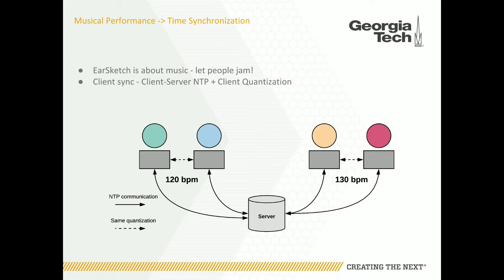EarSketch is about music, so you want to let people jam. For implementing client-to-client synchronization, there are two steps. First, every browser coordinates its time with our server using NTP — network time protocol. With this coordinated time stream, all play events are quantized to a beat determined by the tempo of the script being played. Essentially, every EarSketch script playing at a certain tempo is locked into the same grid.